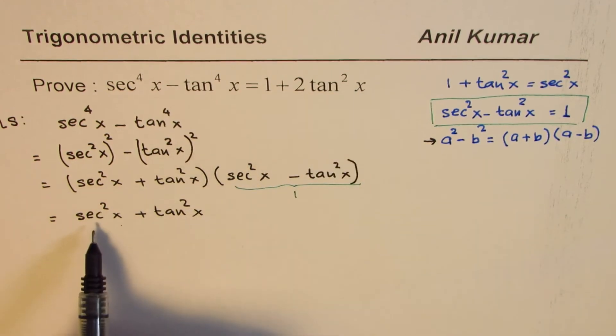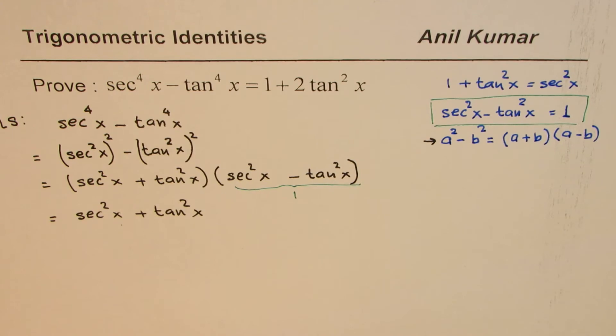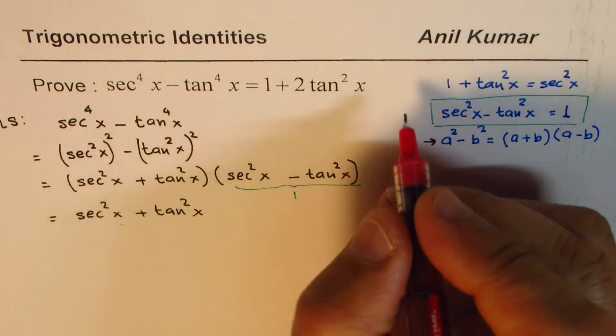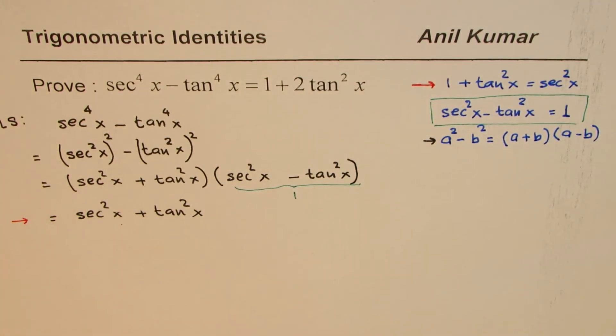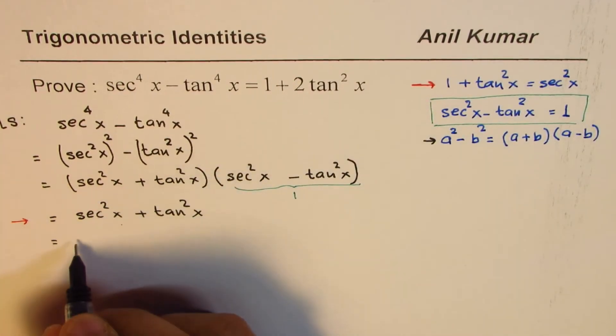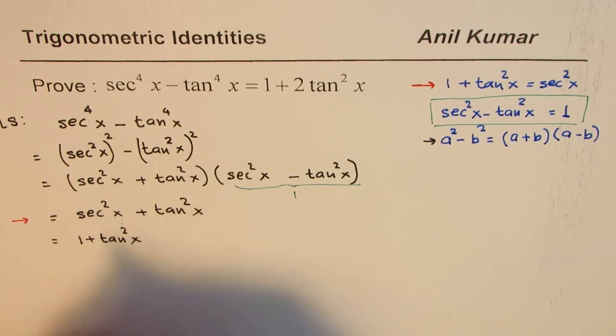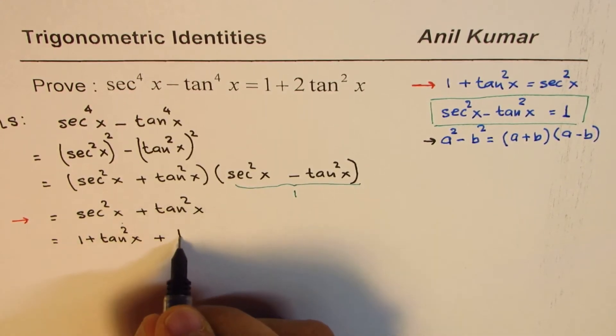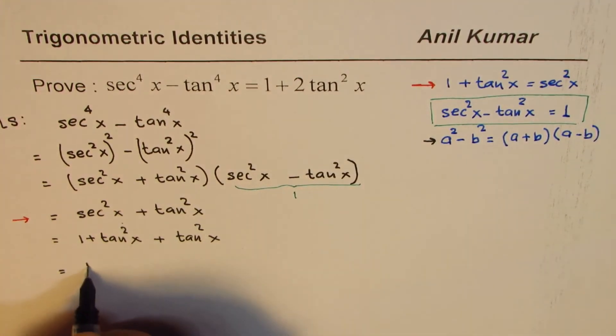That means we can substitute secant square x as 1 plus tan square x. So I'll substitute secant square x plus tan square x. Instead of secant square x I'm writing 1 plus tan square x, plus tan square x. Now you can add tan square x so you get 1 plus 2 tan square x.